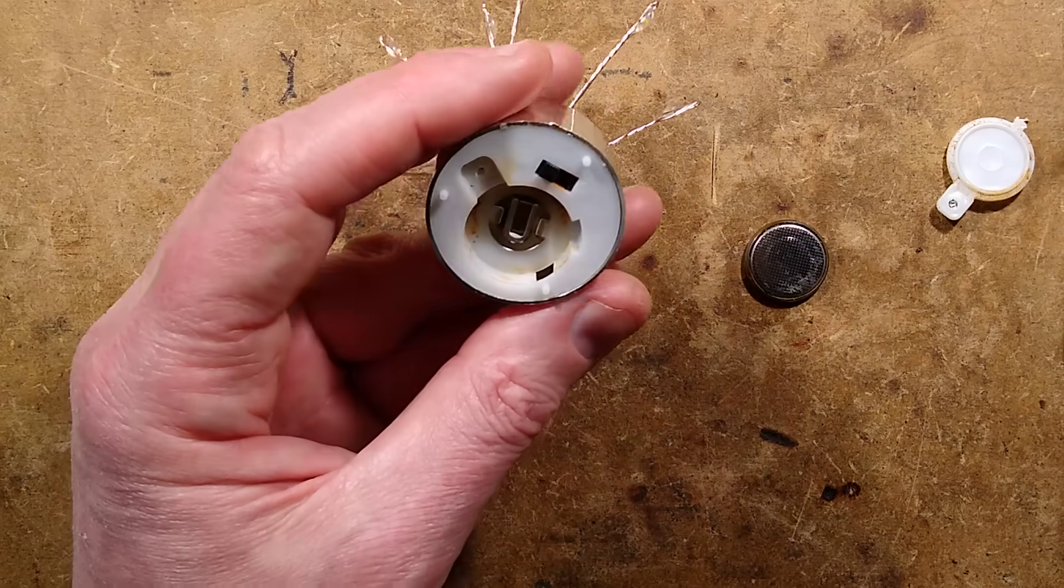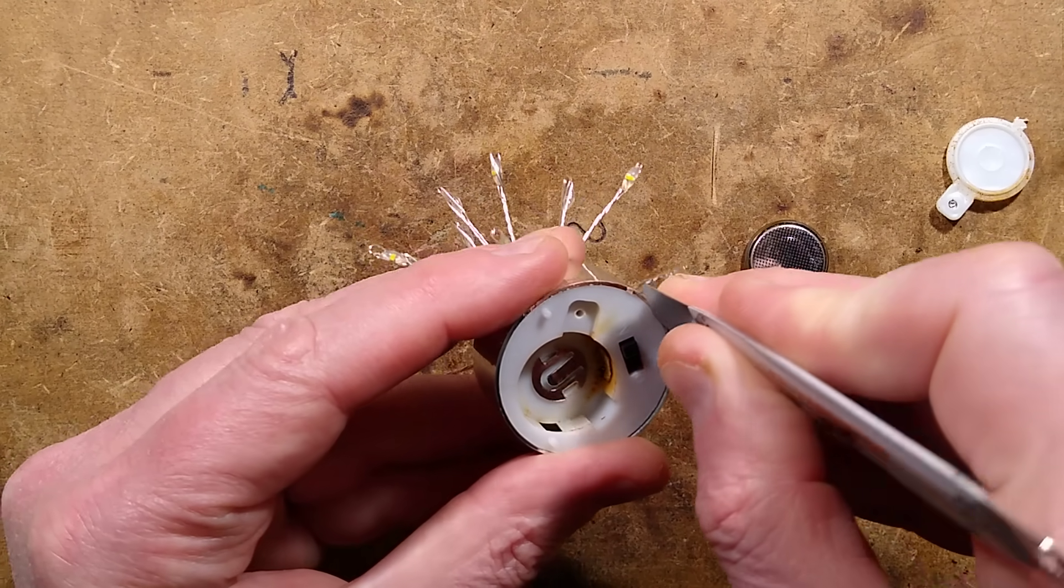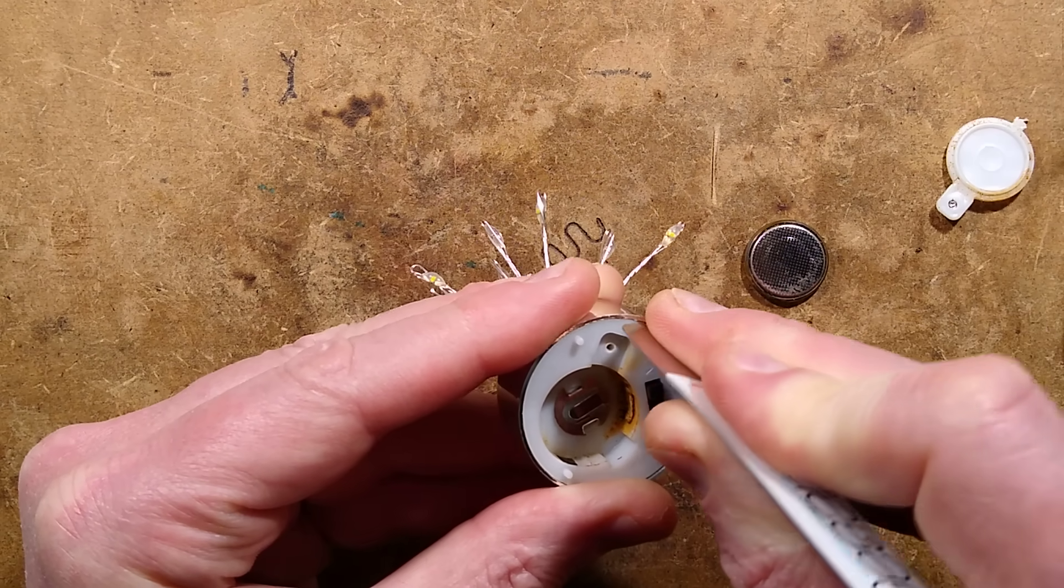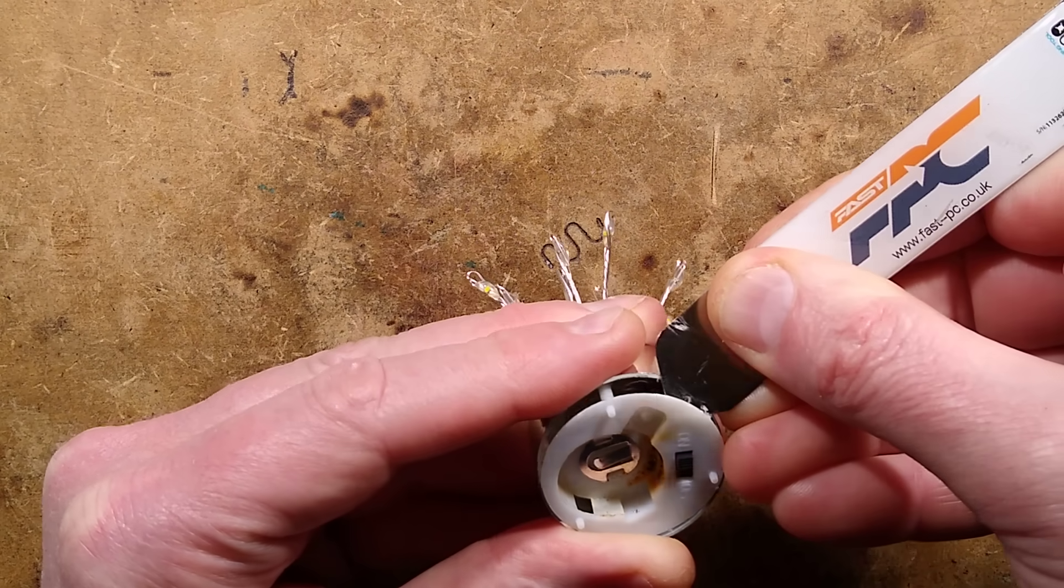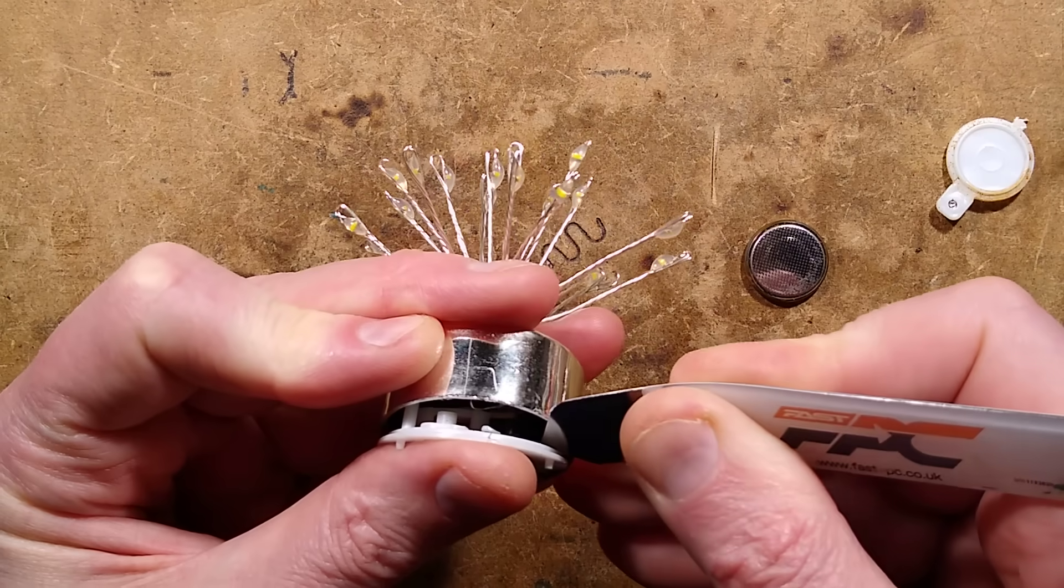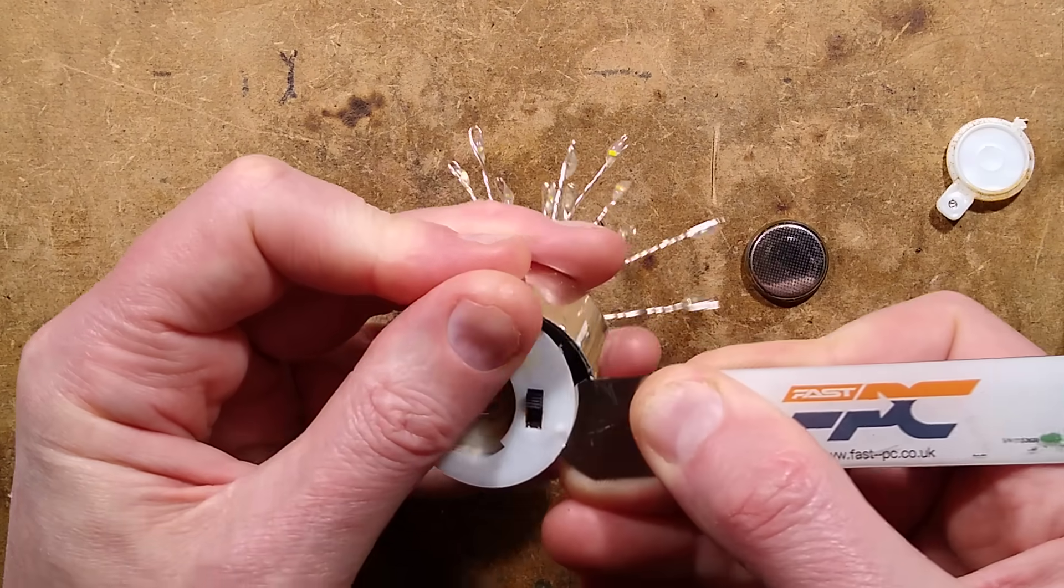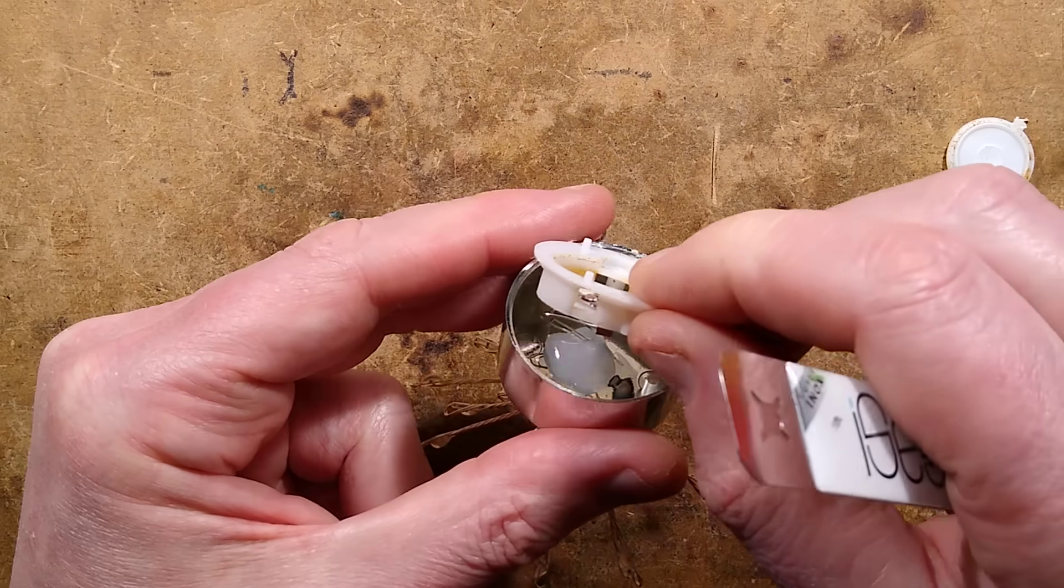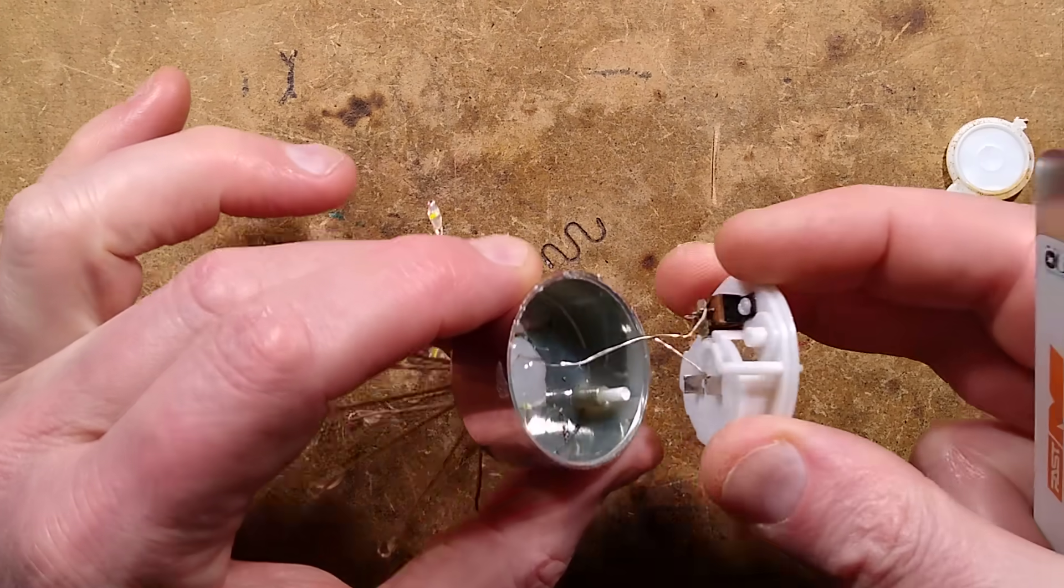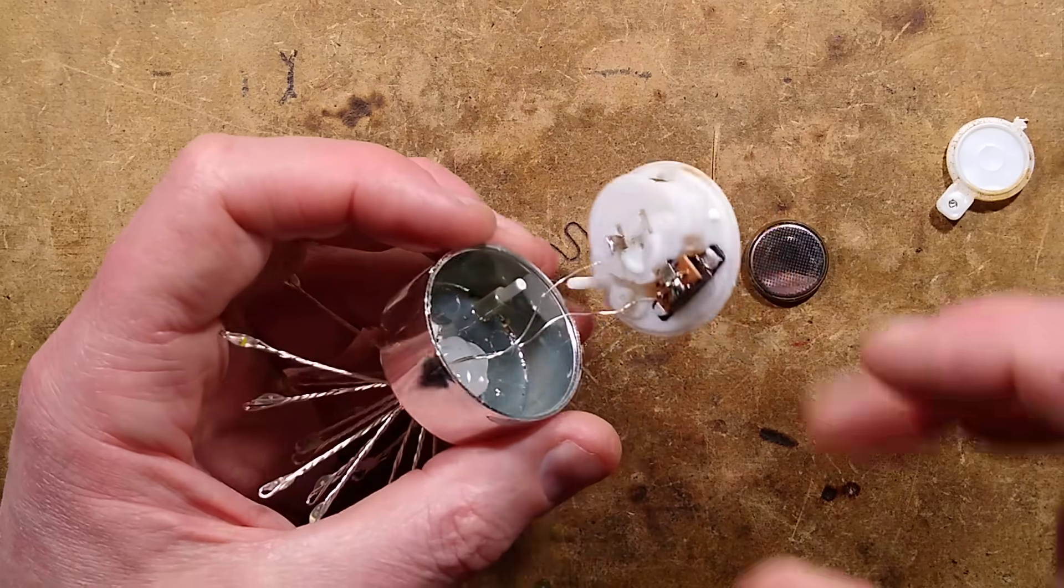Right, tell you what, let's open this up. Let's get the spudger into it and see if we can work out how this opens unless it's glued together. It might be glued. No it's not. It's pressed together with pins by the look of it, hopefully they've not glued one of them in though. Oh, one of them has just snapped off.